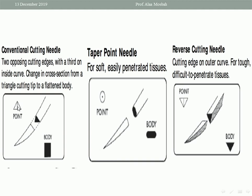For the reverse cutting needle, the cutting edge is on the outer or convex surface. In summary: cutting edge on the concave surface means conventional cutting needle; cutting edge on the outer or convex surface means reverse cutting needle. The mark on the label will be an inverted triangle. If you see that mark on the suture label or cover, you understand this is a reverse cutting needle.